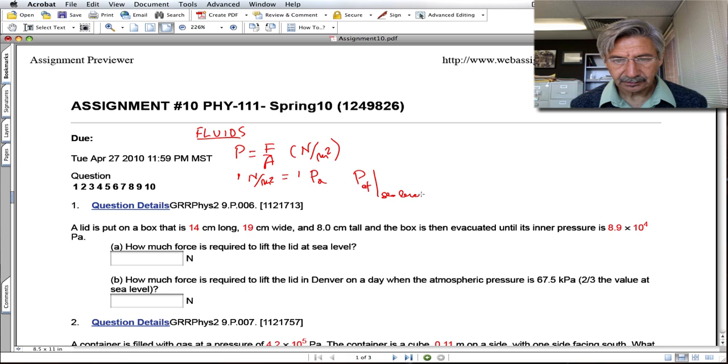The atmospheric pressure at sea level is 1.01 times 10 to the fifth Pascals. We are going to use this information to deal with the first problems.